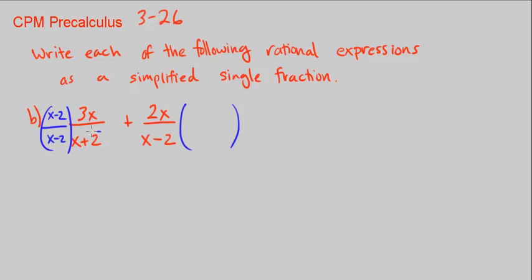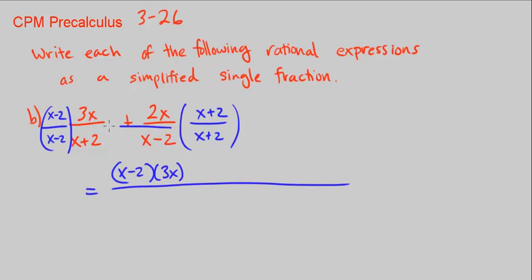This one, we're going to multiply by x plus 2. But do that in the numerator as well. So when we multiply, we're just going to have x minus 2 times 3x over, these are all a big common denominator, so I'm going to write it as x minus 2 times x plus 2. Plus, the numerator over here is 2x times x plus 2.